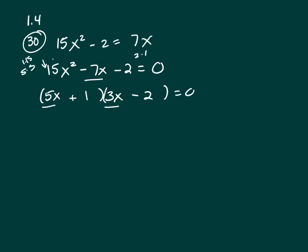5x times 3x is 15x squared. Positive 1 times negative 2 is negative 2. Multiply the insides and you get 3x. Outside you get negative 10x. Combine those and you get negative 7x. That works.